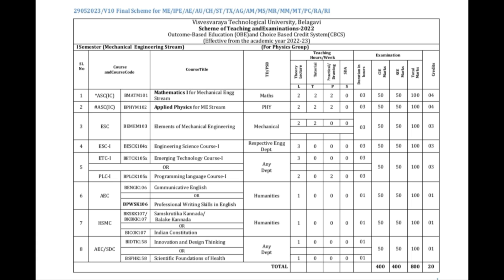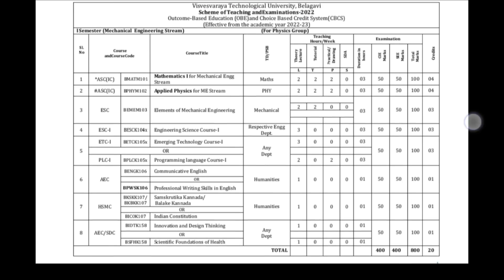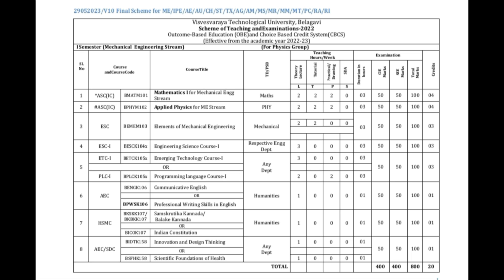As you can see here, Mathematics has 4 credit points, Applied Physics is also 4, Elements of Mechanical Engineering is 3 credits, and Engineering Science like Emerging Technology, Programming Language, or Community English contains 3 credits. Professional Writing is 1, Indian Constitution is 1, Scientific Foundations of Health is 1, and Innovation and Design Thinking is also 1 credit. This totals 20 credits in the P-cycle.